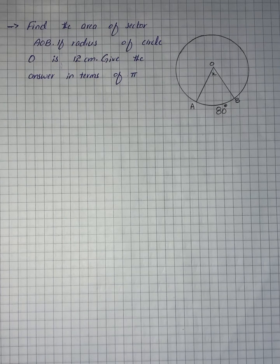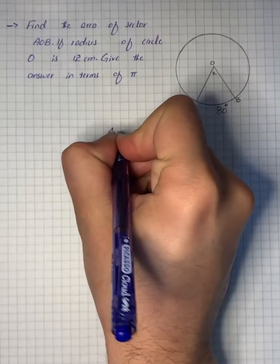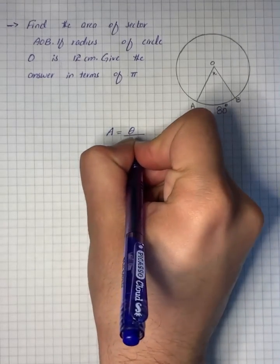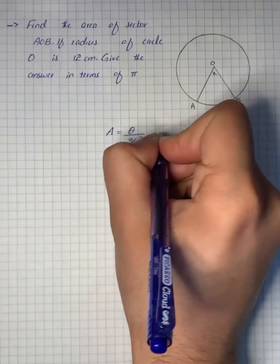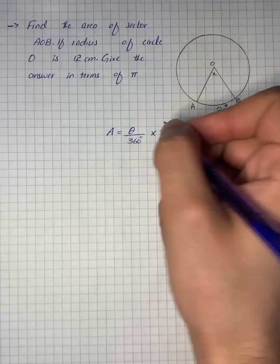So the area of a sector with central angle theta and radius R is A equals theta by 360 degrees into pi R squared.